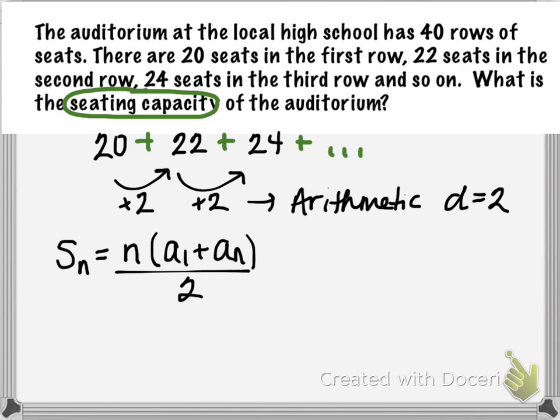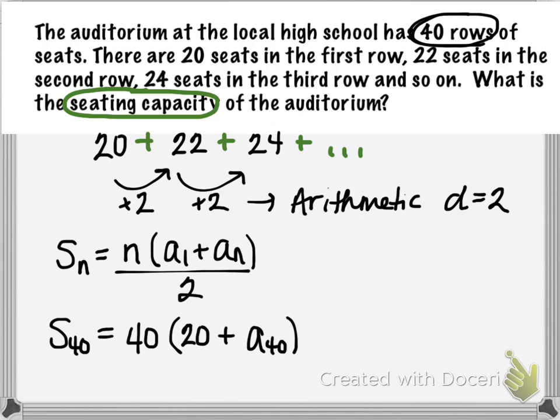In this case, since we have 40 rows, we're looking to add the number of seats in all 40 rows. That means we want to find the 40th partial sum, s sub 40. So n, the number of terms, is 40. Our first term, the number of seats in the first row is 20, plus a sub n, in this case would be a sub 40. It's the number of seats in the 40th row, and we don't know that yet. So I'll just leave that as a sub 40, all divided by 2.